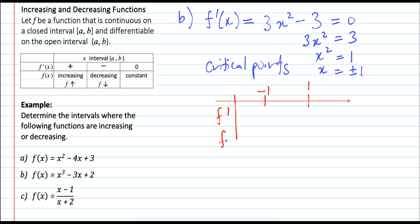Draw the table with critical points -1 and 1, and rows for f prime and f. Choose a number less than -1, for example -2: 3 times (-2)² = 12 minus 3 is positive, so the function is increasing. Choose a number between -1 and 1, for example 0: 3 times 0 minus 3 equals -3, a negative number, so the function is decreasing between -1 and 1.